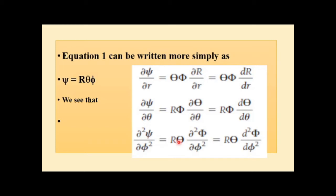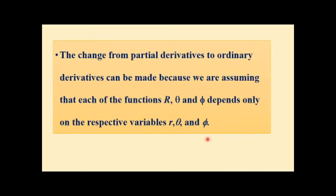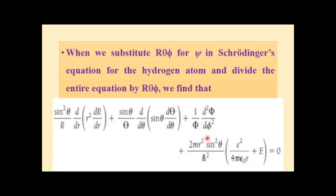These double derivatives follow the same pattern. The change from partial derivatives to ordinary derivatives can be made because we assume each function depends only on its respective variable — r, theta, or phi. When we substitute capital R, capital Theta, capital Phi for psi in Schrödinger's equation for the hydrogen atom and divide the entire equation by R, Theta, and Phi, we obtain the separated form as a homework exercise.